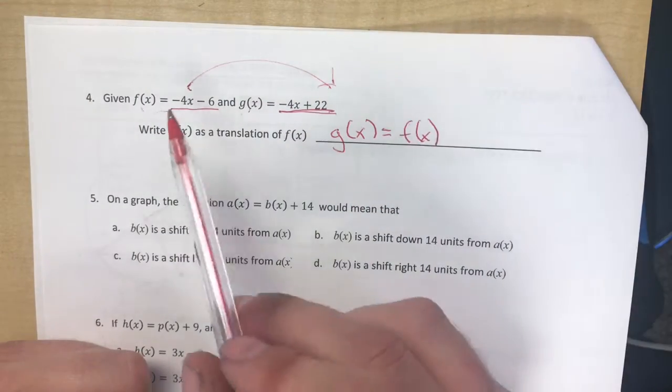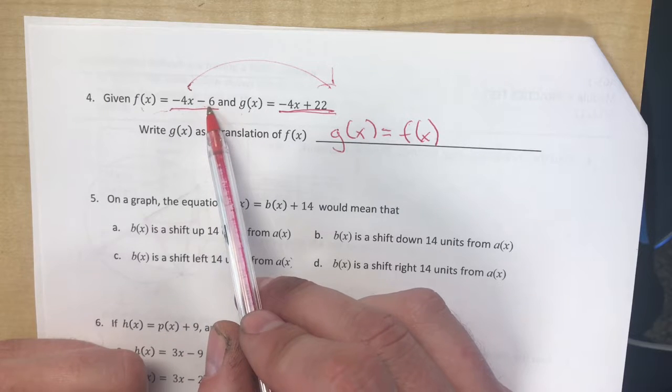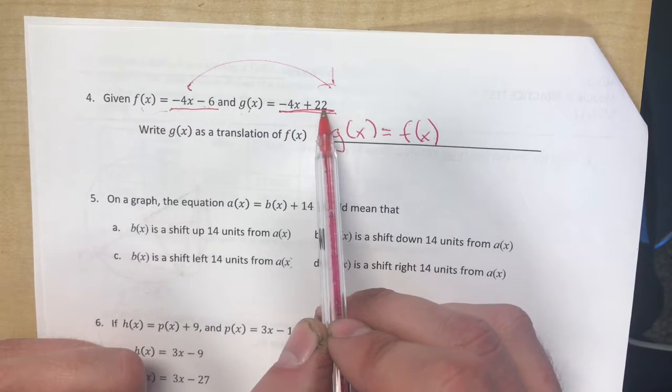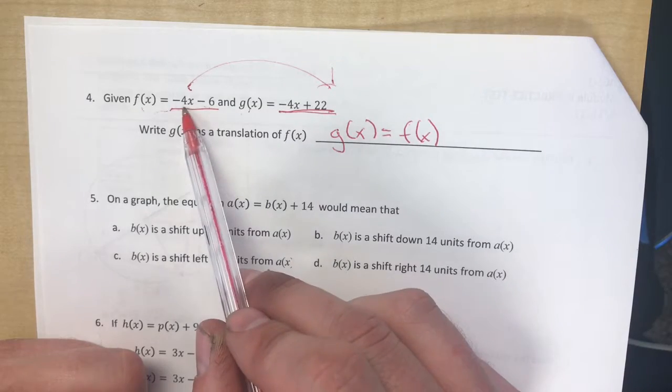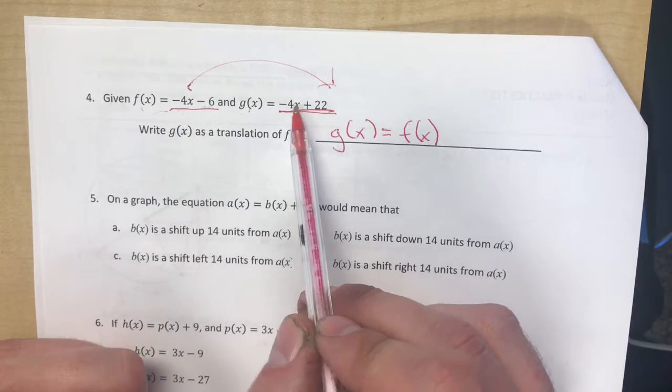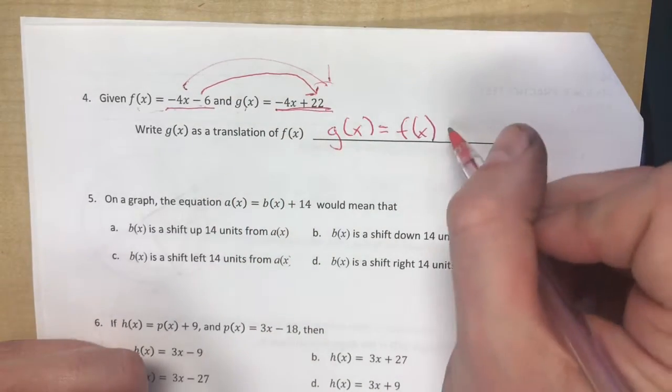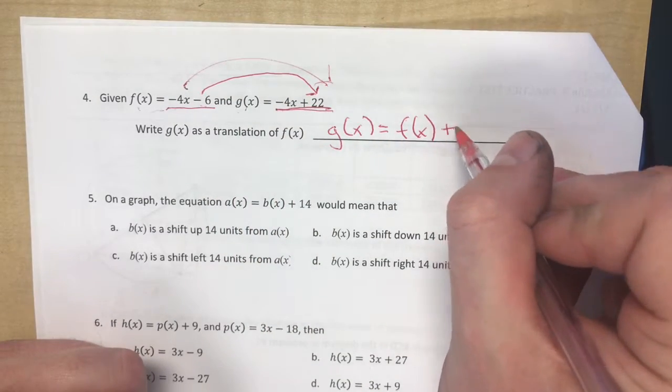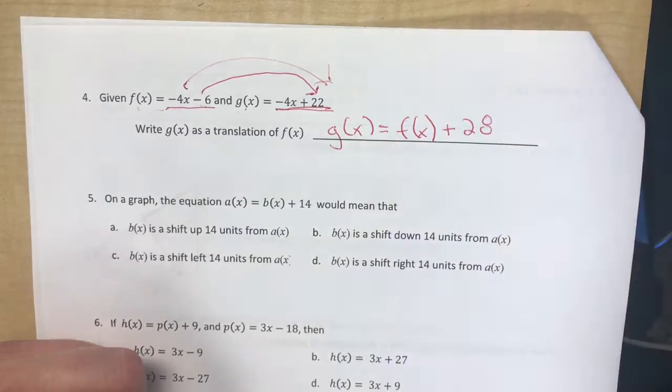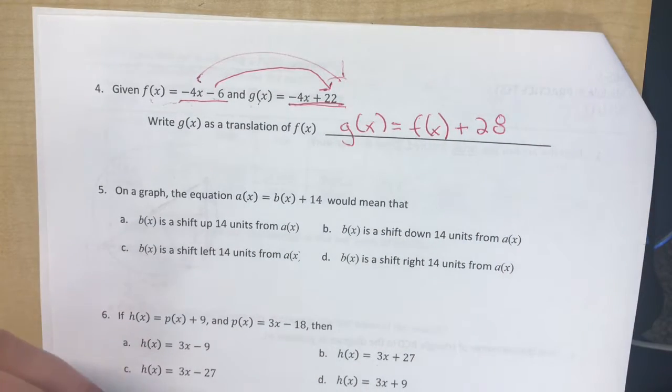So if g(x) equals f(x), it would mean that g(x) is negative 4x minus 6. But it's not. g(x) is negative 4x plus 22. So nothing needs to happen for the negative 4x. That's the same. But how would we get ourselves from negative 6 all the way up to 22? And as I circulated, I noticed most of you guys got this right. We would need to add 28 to it, to f(x), to have it be the same as g(x).